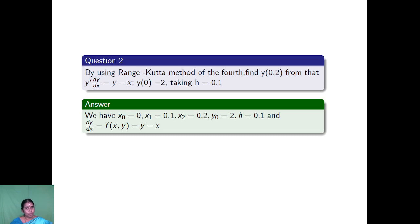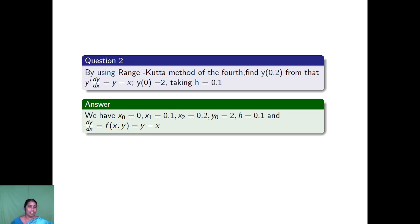Next question: using Runge-Kutta method of fourth order, find y(0.2), given that dy by dx equals y minus x, where y(0) equals 2 and h equals 0.1. The given values are: x0 equals 0, x1 equals 0.1, x2 equals 0.2, y0 equals 2, h equals 0.1, and the function dy by dx equals y minus x.